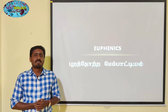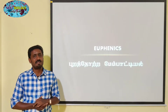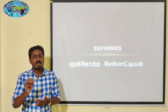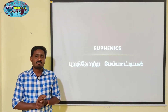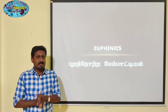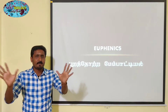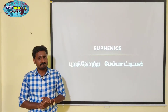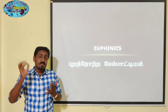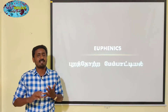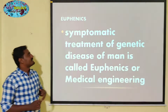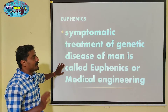U-Phoenix is a genetic disorder. This is a genetic disorder. U-Phoenix is a phenotype. It is not a genetic degenerate. So, the definition first: symptomatic treatment of genetic disease of man is called as euthenics or medical engineering.